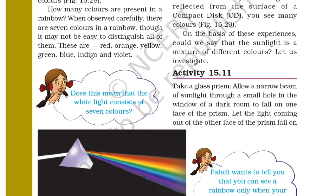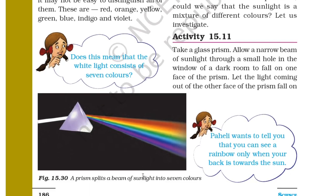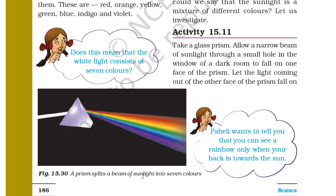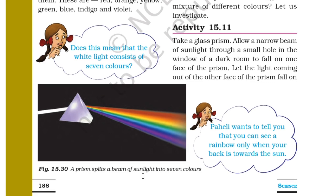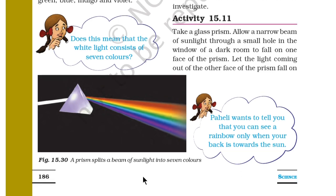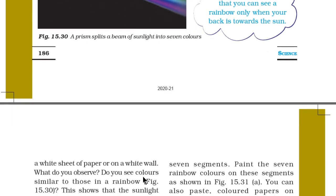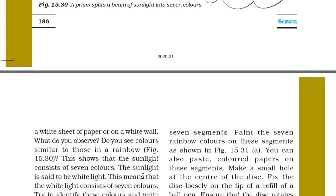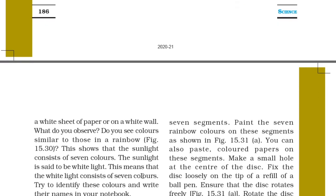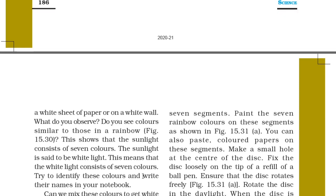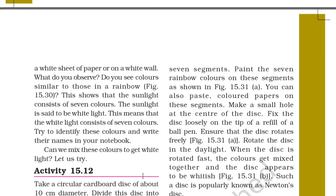Take a glass prism. Allow a narrow beam of sunlight through a small hole in the window of a dark room to fall on one face of the prism. Paheli notes that you can see a rainbow only when your back is towards the sun. Let the light coming out of the other face of the prism fall on a white sheet of paper or a white wall. Do you see colors similar to those in the rainbow? This shows that sunlight consists of 7 colors — sunlight, said to be white, is actually composed of 7 colors.